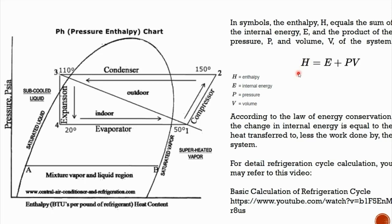Just to refresh: enthalpy encompasses two components — internal energy E, and the work done by or onto the system. Work done equals P times V, pressure times volume. For example, in the compressor, we have work done by the compressor and also a change in temperature which involves internal energy. Both P and E increase, which is why the enthalpy at point 2 is higher than at point 1.